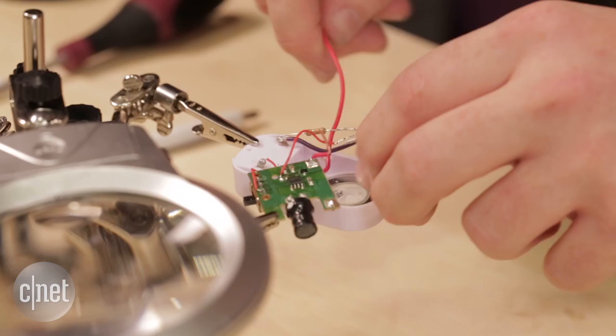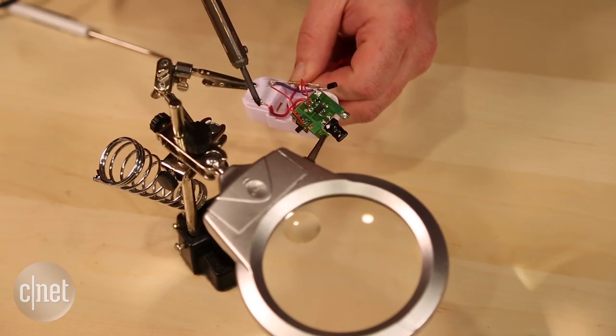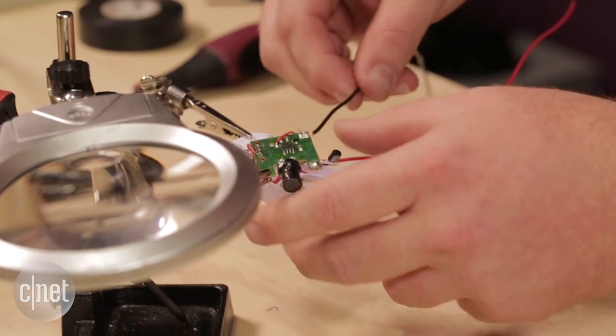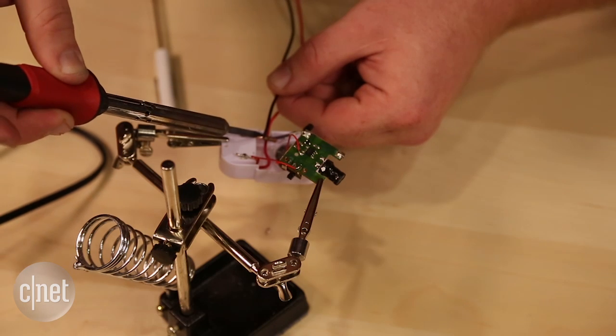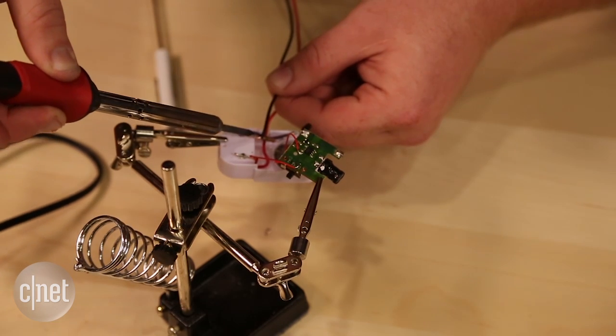Now take a new wire and attach one end of it to the positive terminal of the battery. Now take another new wire and connect it between the resistor and the negative battery terminal.